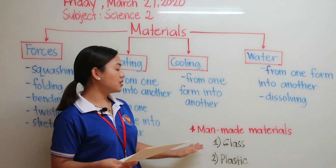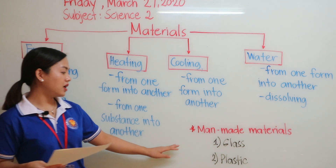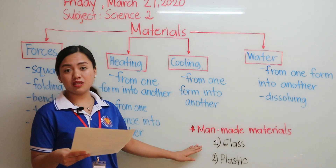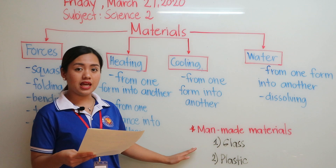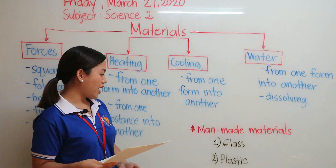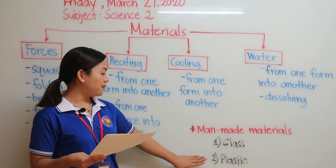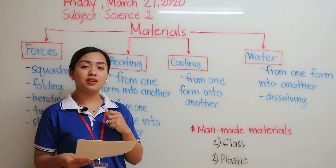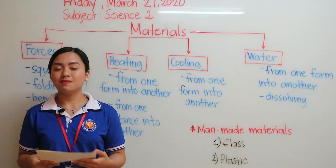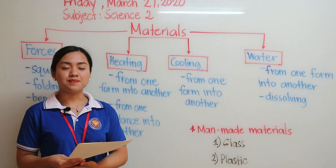Next, we have man-made materials. We have glass — we can mix sand to produce glass containers. We also have plastic: if we use plastic and mix it with oil, we can produce plastic toys or any toys that we can play with.